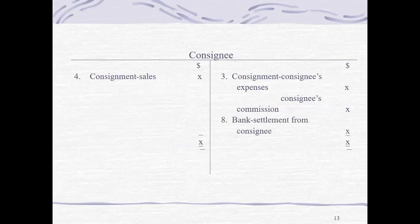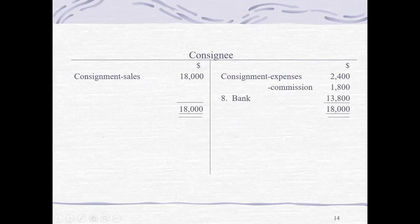For the consignee account — the receivable account — sales will be on the debit side and all reimbursable expenses made by the consignee, as well as the commission, will reduce the amount. The difference will be the remittance to be made by the consignee to the consignor. In the example shown, sales less expenses and commission results in the consignee remitting the difference of 13,800 along with the account sales report.